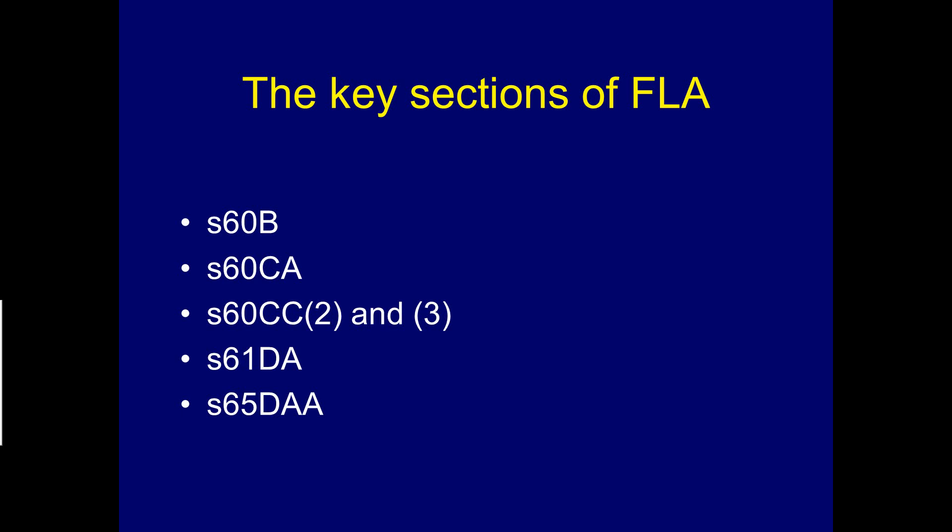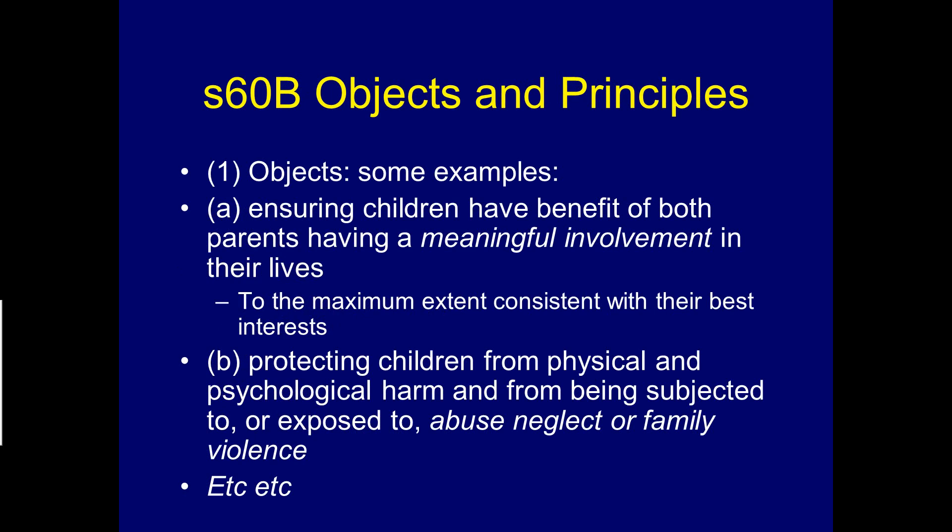We will work through these sections one by one and then look at how the court approaches them. Firstly, looking at section 60B — it would be good to have it in front of you. This is called the Objects and Principles, and it's really an overarching section intended to set out the key principles the court has to take into account when making orders about children.